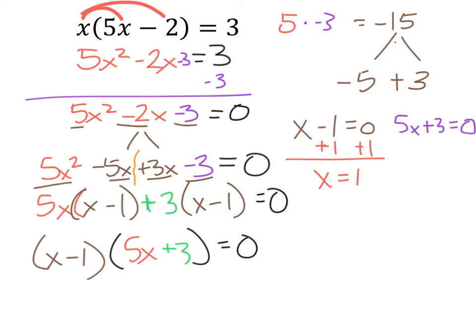Now let's look at 5x plus 3 equals 0. We want to isolate that x, so we'll subtract 3 from both sides, and that would give us 5x equals negative 3. Finally, just by dividing 5 on both sides, we would find that x here is negative 3/5.